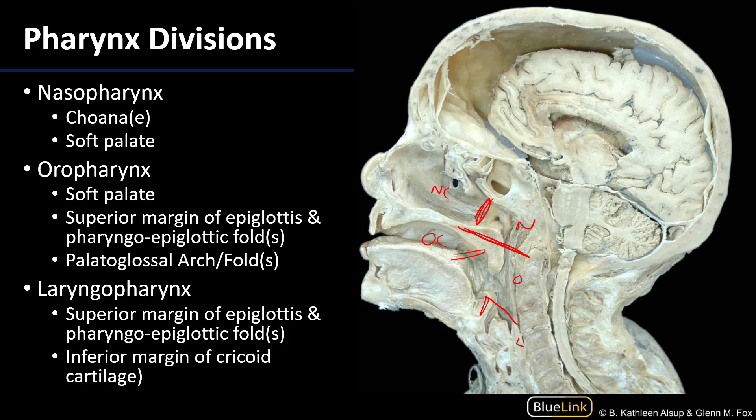We can also see the superior margin of the epiglottic cartilage there, and laterally — it's tough to see here — but there are pharyngoepiglottic folds which form the boundary between the oropharynx superiorly and the laryngopharynx inferiorly.